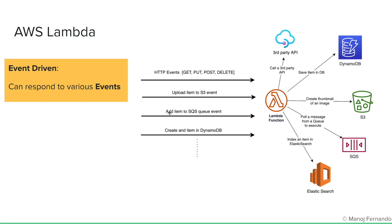Or it could be adding an item to an SQS queue. The Lambda will pull that message from SQS and execute it. We already discussed DynamoDB streams — whenever an item is added to DynamoDB, the stream emits, and through that stream we can call a Lambda function. That Lambda function can be used to index that item into Elasticsearch to optimize searching in your applications.